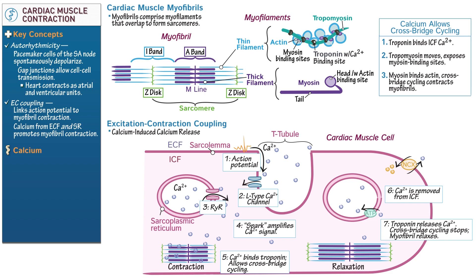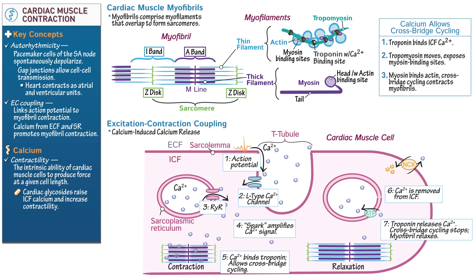Finally, as a clinical correlation, let's consider the role of calcium in determining contractility. Contractility, also referred to as ionotropism, refers to the intrinsic ability of cardiac muscle cells to produce force at a given cell length. Contractility can be increased or decreased by various factors, including availability of calcium. For example, cardiac glycosides, which are derived from the digitalis plant, raise intracellular calcium concentrations and therefore increase contractility — thus, cardiac glycosides are prescribed for heart failure. On the other hand, calcium channel blockers block the L-type calcium channels and prohibit calcium influx, reducing contractility. They're prescribed as a treatment for hypertension, angina, and some arrhythmias.